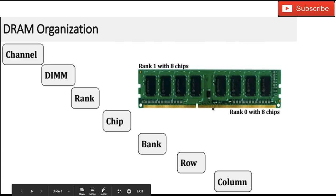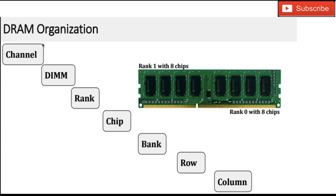After the memory controller, it connects to a particular channel, and in that channel several DIMMs are connected. Zooming into the DIMM you find two ranks since DIMM is a Dual Inline Memory Module. Zooming into a rank you find several chips, and those chips contain several banks. The banks are the DRAM which contains a memory array of rows and columns. You access a particular address using the row decoder and column decoder.